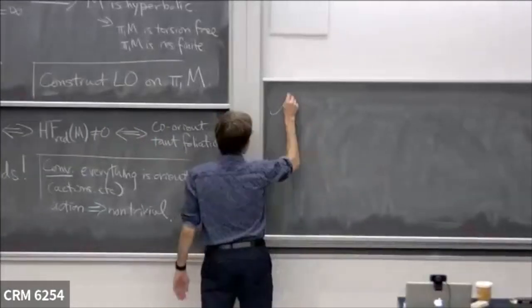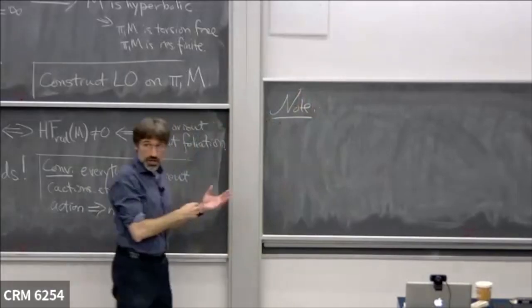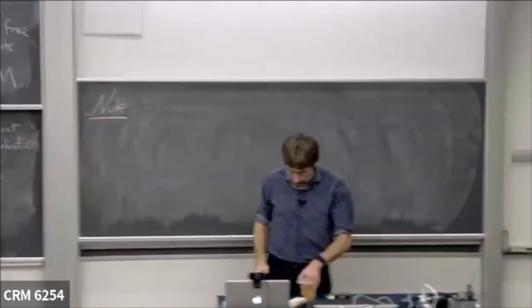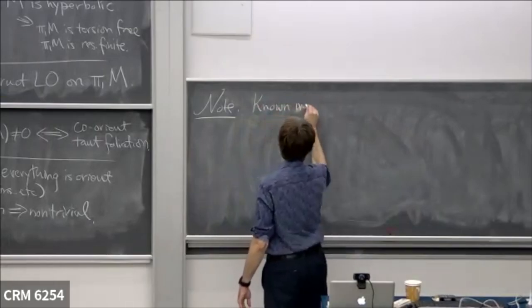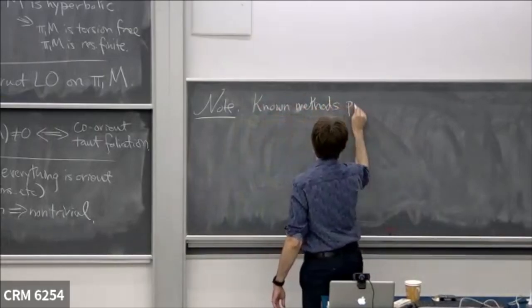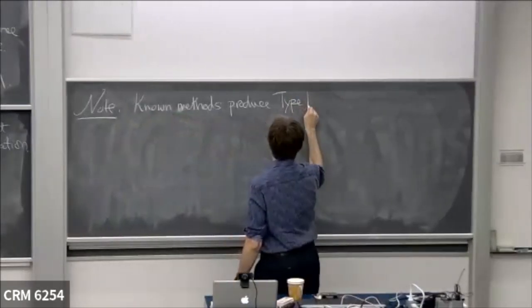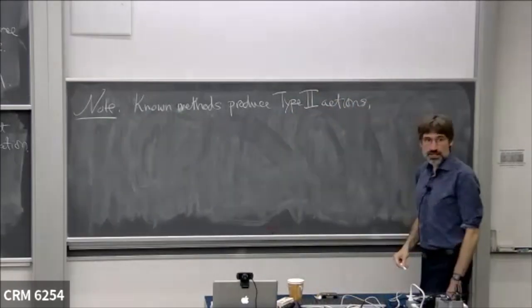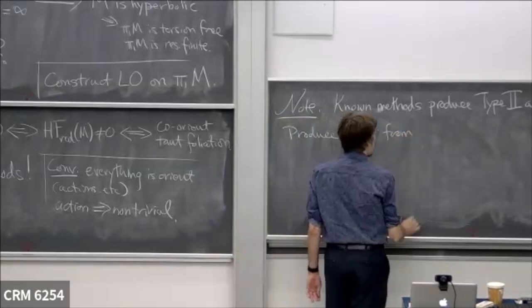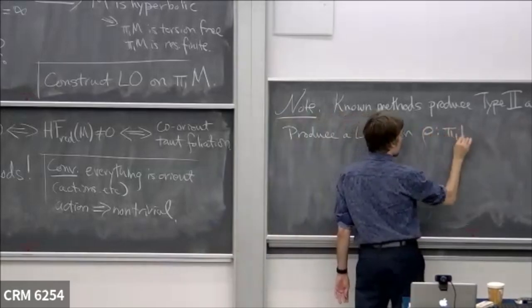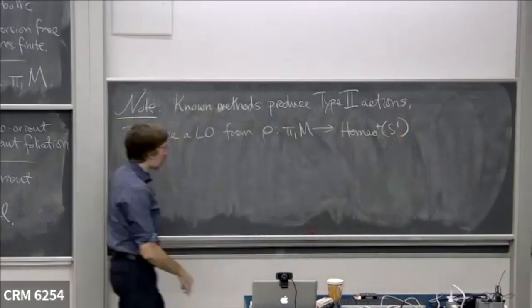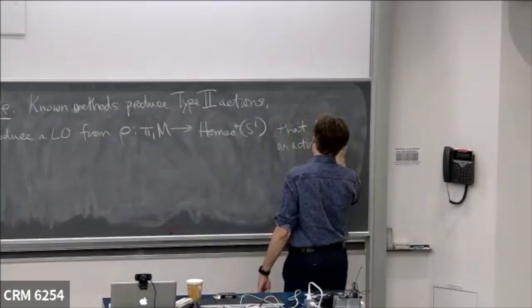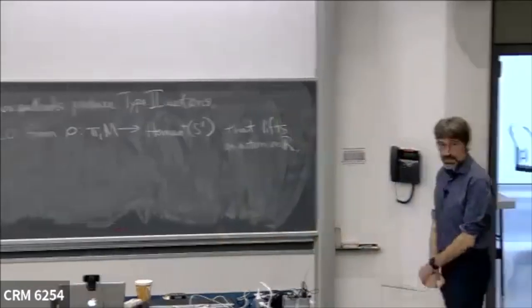Most of the methods we know — to use the language of the last talk — produce type-two actions. That is, you produce a left order from a homomorphism from pi-1 of M into homeomorphisms of the circle that lifts to a homeomorphism on the line.